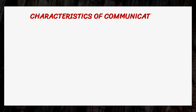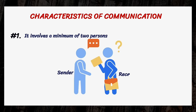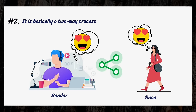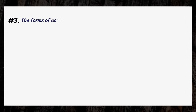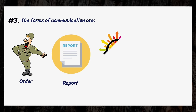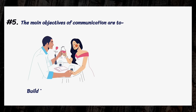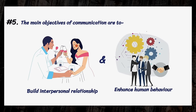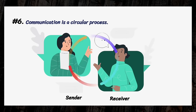Now let's discuss some important characteristics of communication. First, communication involves a minimum of two persons, the sender and the receiver. It is basically a two-way process, and it is incomplete until the message has been understood by the receiver in the same sense. The forms of communication include orders, reports, instructions, queries, etc. It is influenced by the mood and thinking of both sender and receiver. The main objectives of communication are to build interpersonal relationships and enhance human behavior. Communication is a circular process that starts and ends with the sender.